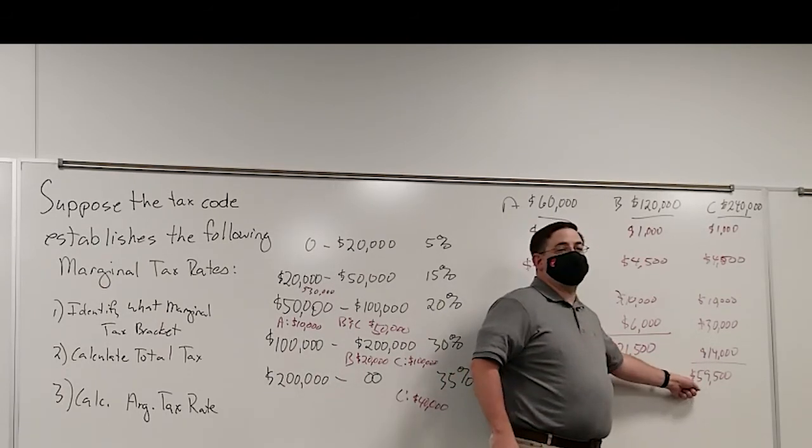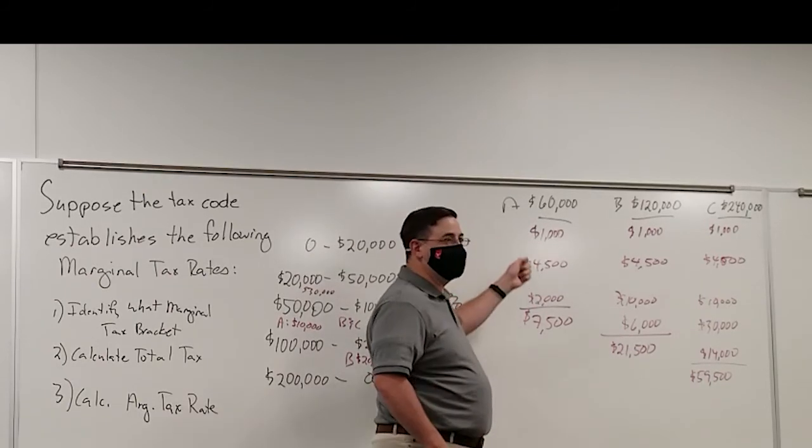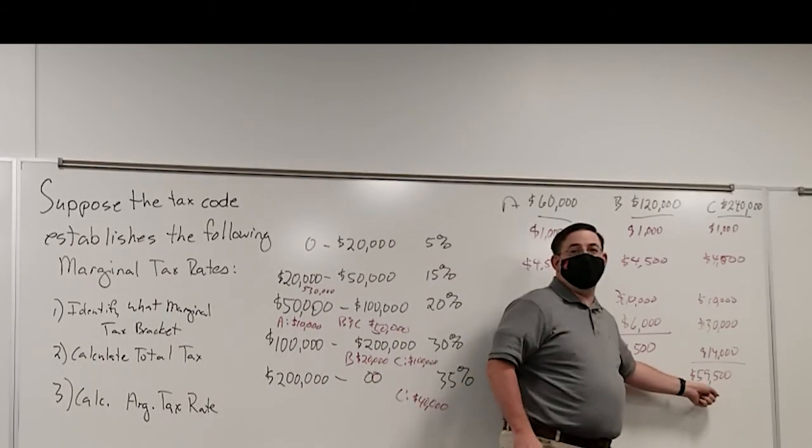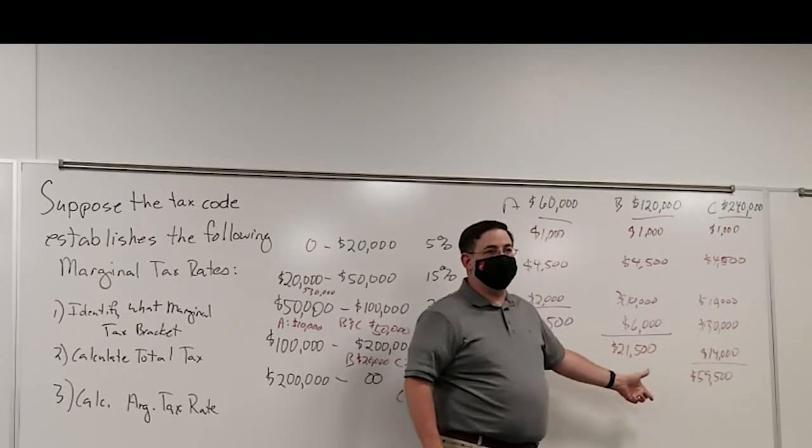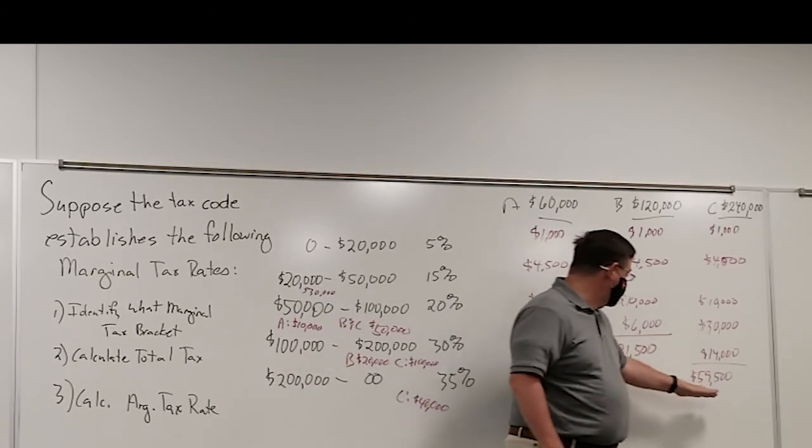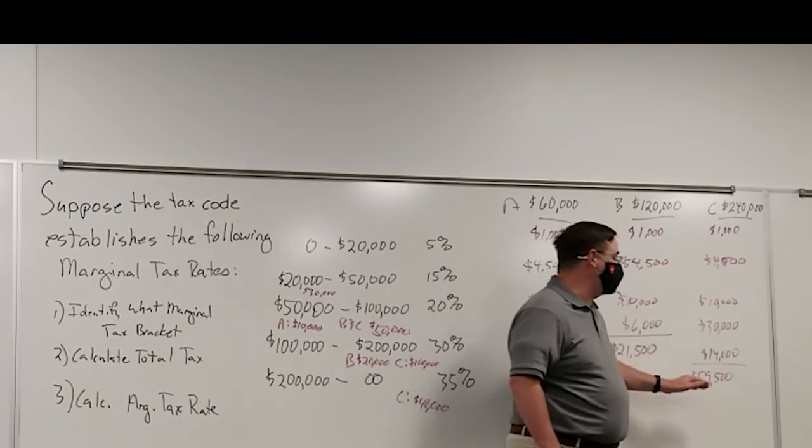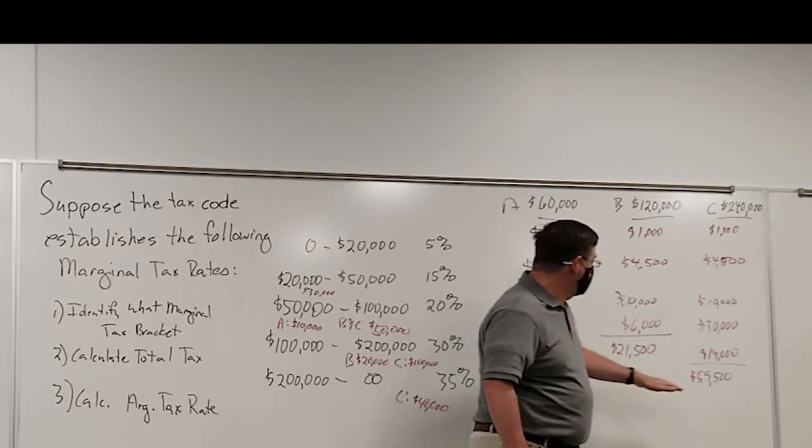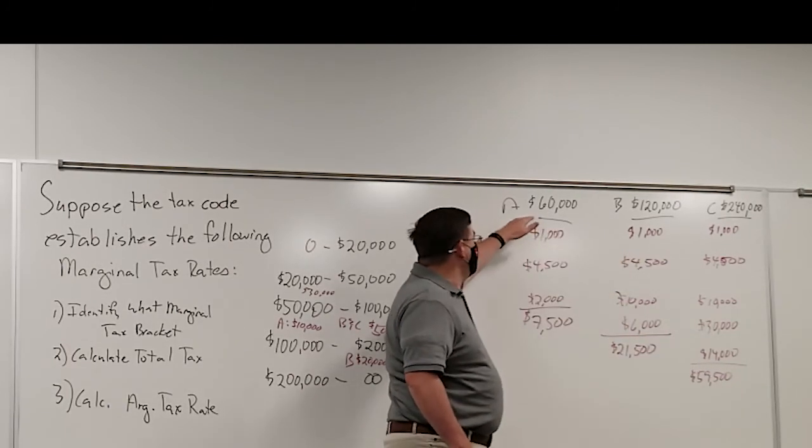In the marketplace, if you've got $59,000 and somebody else has $1,000, you basically have 59 more votes than that person does about what to buy. In the marketplace, we allocate resources according to willingness to pay. Notice also, family C pays as much in taxes as family A is earning.